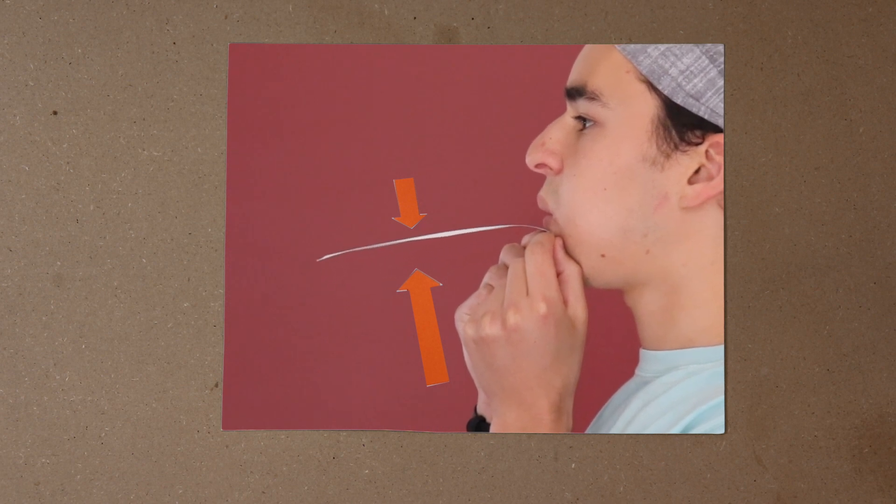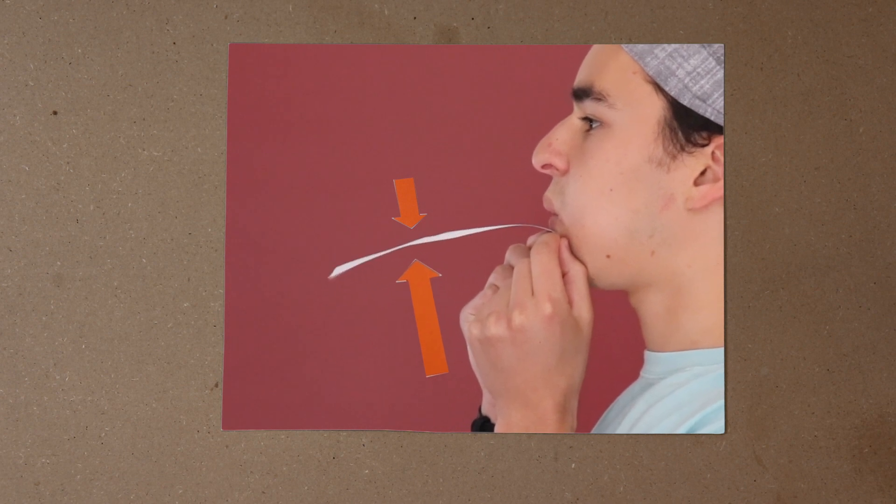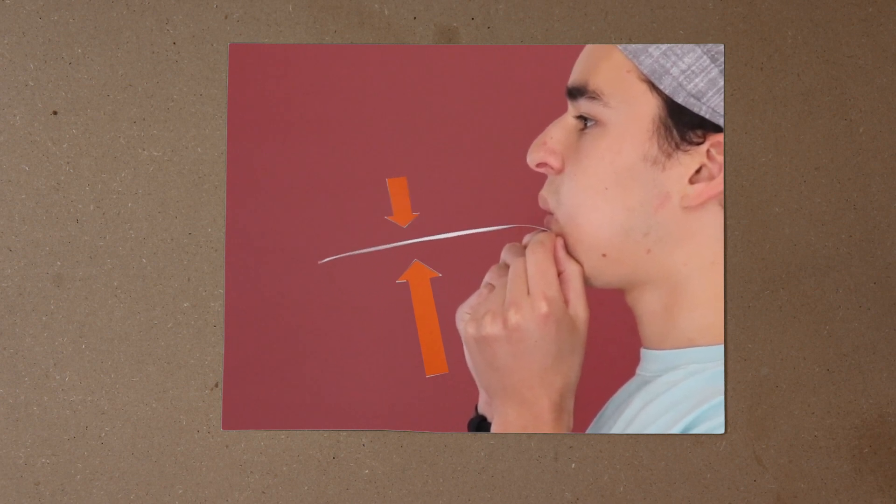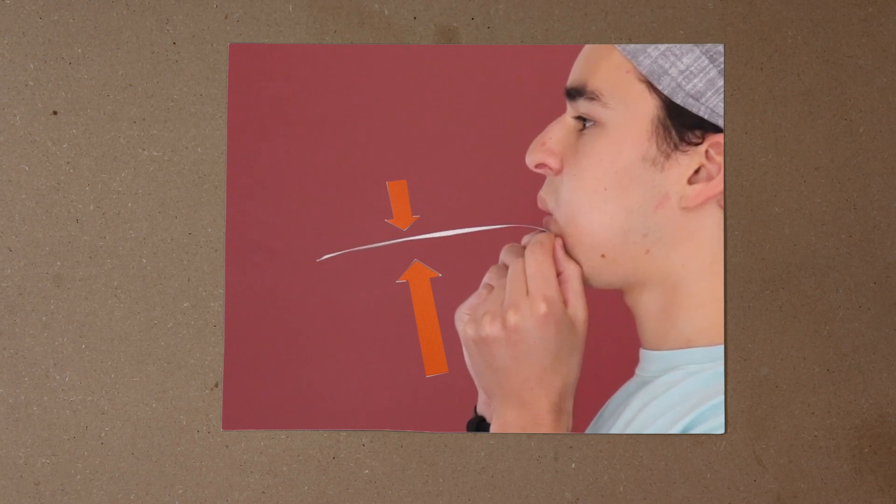In other words, the air underneath the paper is pushing up with more force than the air on top of the paper is pushing down, and that's what makes the paper rise up. This effect is called lift.